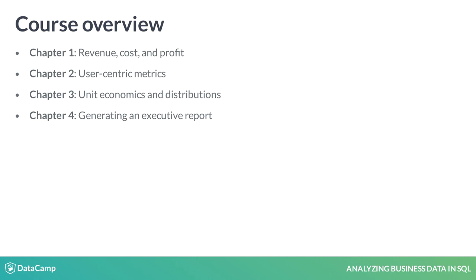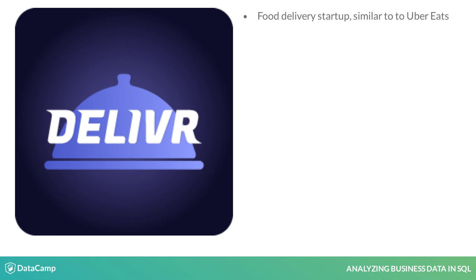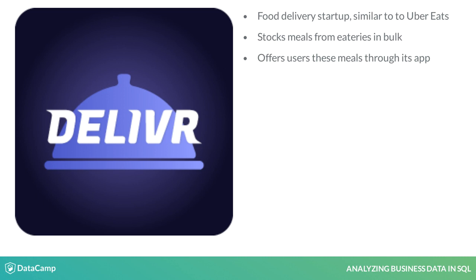Let's dive in. Deliver is a fictional food delivery startup similar to Uber Eats. Deliver stocks meals from eateries in bulk, then offers users these meals through its app. It owns an electric scooter fleet it uses to deliver meals to its users. Its competitive advantage is that users can order meals from several eateries in one order. You've been hired there as a data analyst, and your first task is to determine Deliver's profitability.